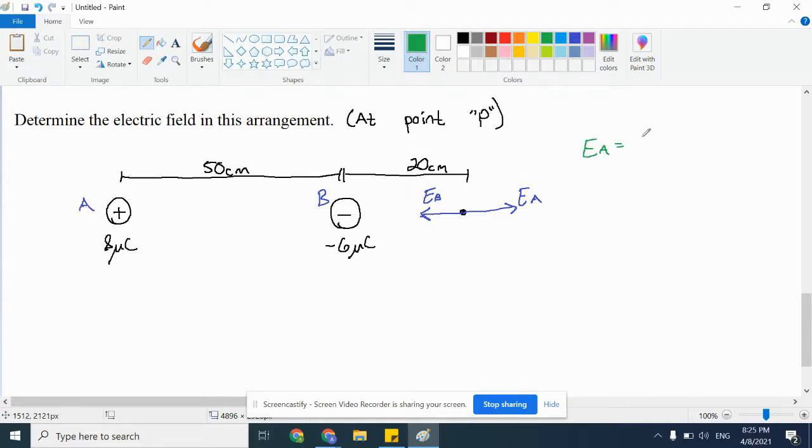So, the field from A is KQ over R squared, 9E9, 8E negative 6 over 70 centimeters, so 0.70 squared. 9 times 10 to the 9th times 8 times 10 to the negative 6. Divide that by 0.7 squared, and I get a field of about 147,000.